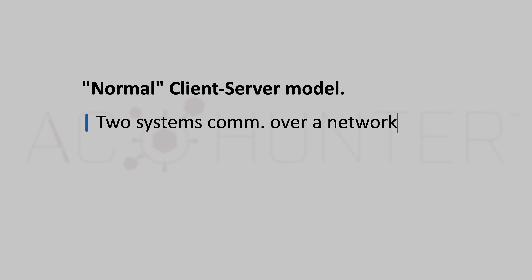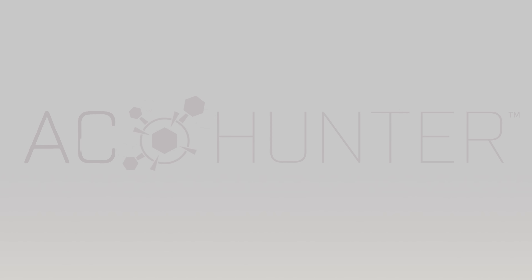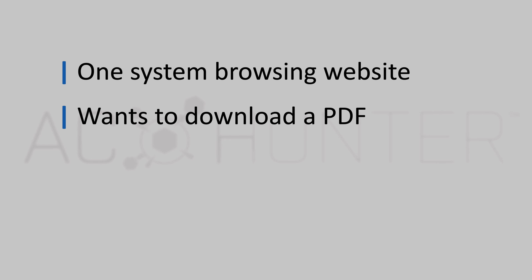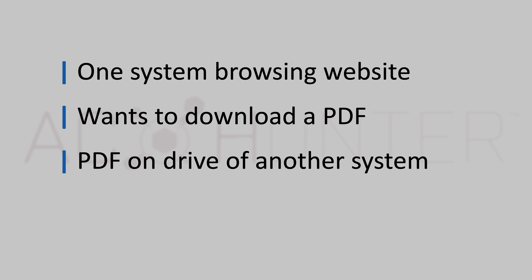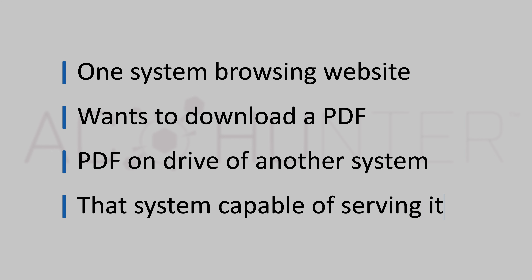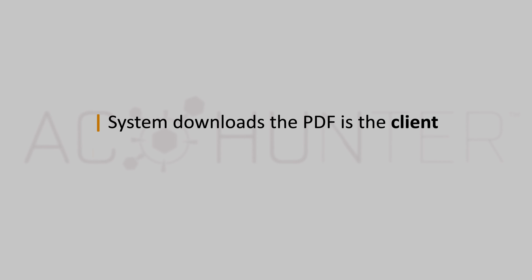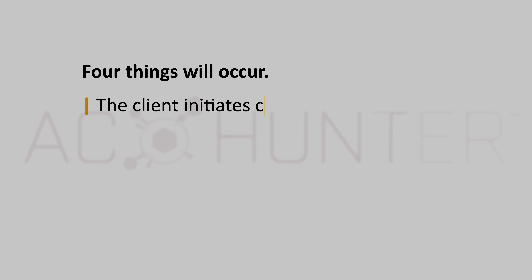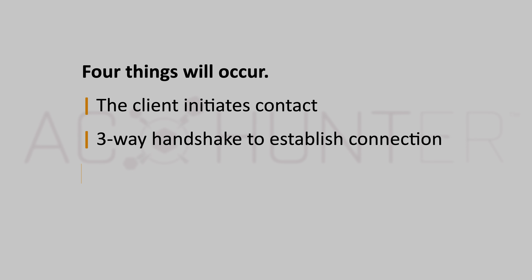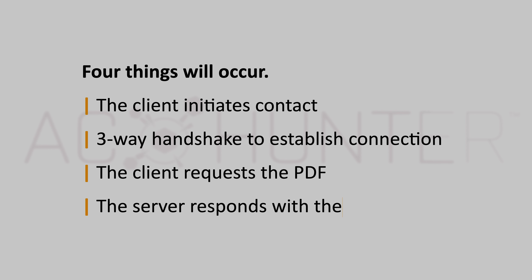So first, what is a normal client-server model? In its simplest form, it's just two systems communicating over a network — typically the internet. Based on their relationship, one assumes the role of the client and the other the server. Consider a scenario where one system wants to download a PDF file: the system requesting the download is the client, and the system serving the PDF is the server. For this event to take place, four things occur: the client initiates contact, a three-way handshake establishes a connection, the client requests the PDF, and the server responds with it.